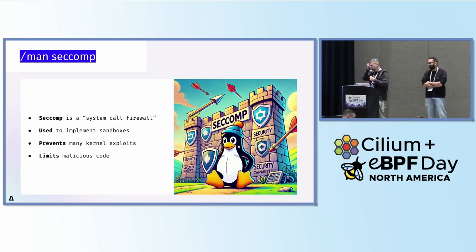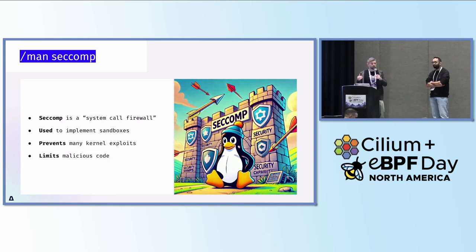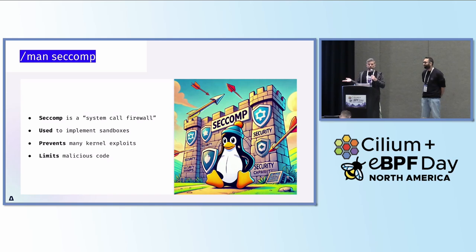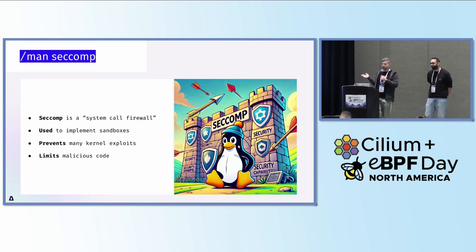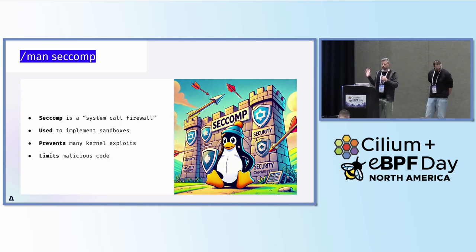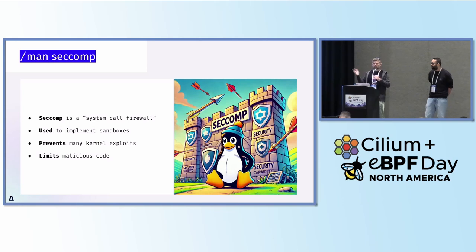Seccomp — if I need to explain to someone what it is — it's like a system call firewall for applications. It's a way to filter out the system calls an application makes in a Linux environment. At the beginning it was used to implement sandboxes, originally invented mostly for browsers, so when they're running JavaScript to sandbox the application. If there is a vulnerability exploited in the interpreter, it won't affect the whole system.